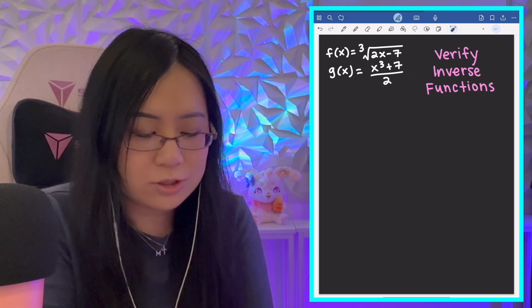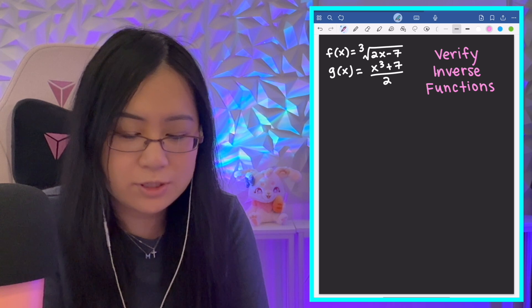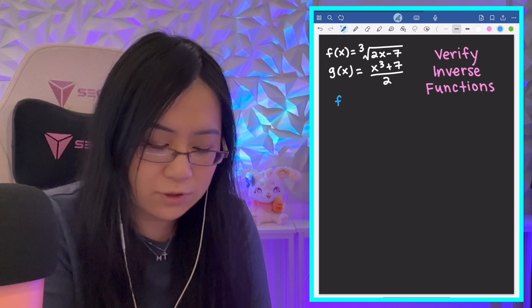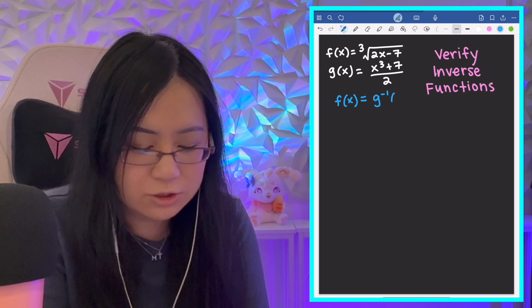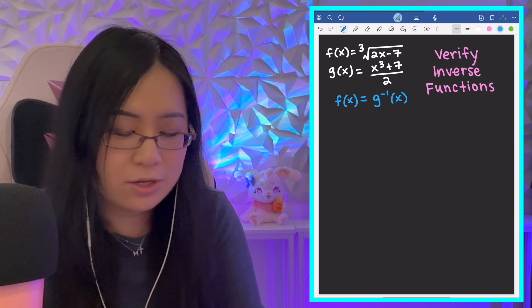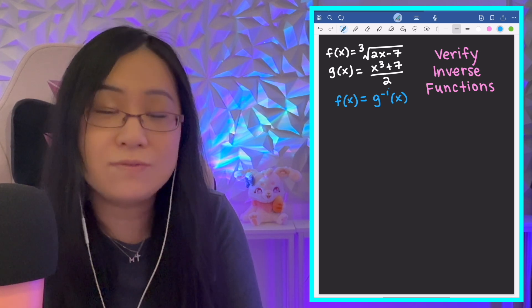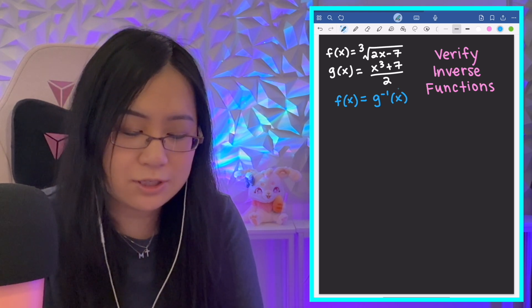So, just as a notation point here, the way that we write inverse is like this. If they're inverses of each other, f(x) is the inverse of g(x). So, we have this negative 1 up there. This is not the reciprocal. It's not an exponent of negative 1, even though it looks like it. It's the inverse.